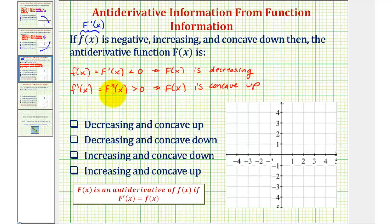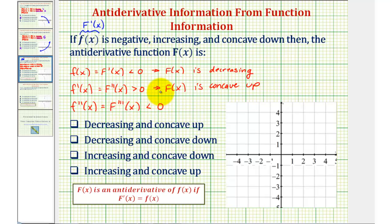If the second derivative was less than zero or negative, that means big F would be concave down. We're also told that f of x is concave down, meaning the second derivative of f — which is actually the third derivative of big F — would have to be negative. But this information is actually not needed to answer the question. We now know that big F is decreasing and concave up, and therefore our answer is the first choice: decreasing and concave up.